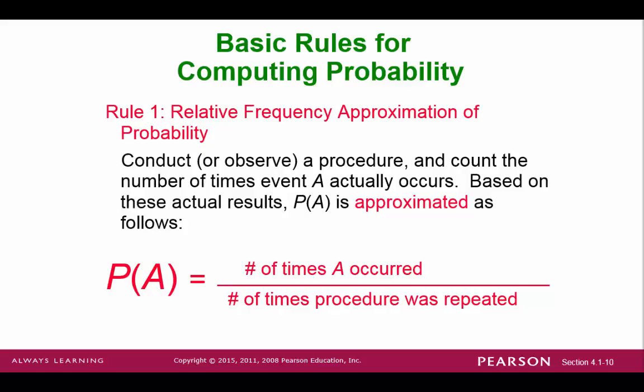Here is one of the three ways to compute a probability. The relative frequency approximation is based on an experiment that you conduct many times. For example, you might toss a coin 100 times, and you might get 57 heads. Then your relative frequency approximation would be 57 out of 100, or 57%.